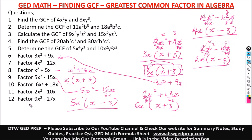Number 12: for 9x² − 27x, the greatest common factor is 9 for the numbers and x for the variable. Factoring out 9x: dividing 9x² by 9x gives x; dividing 27x by 9x gives 3. The factored form is 9x(x − 3). That's how you find the greatest common factor in algebra, and we'll be applying this knowledge in quadratic equations in the next video.